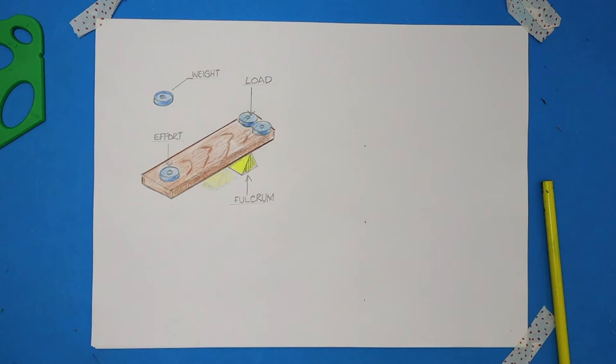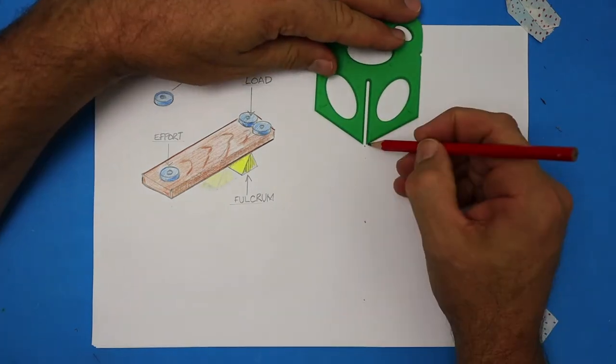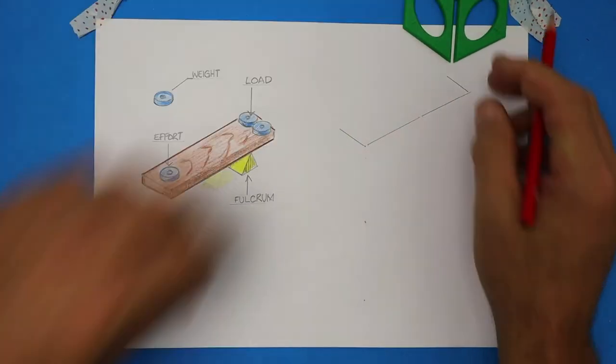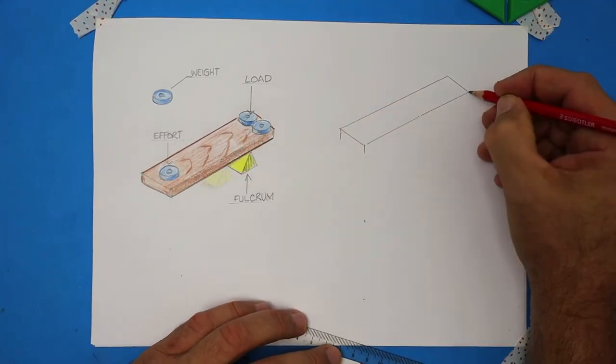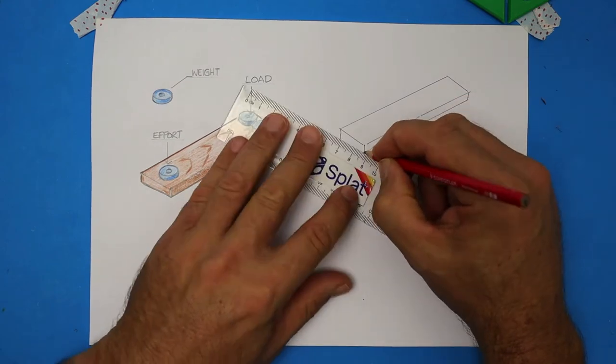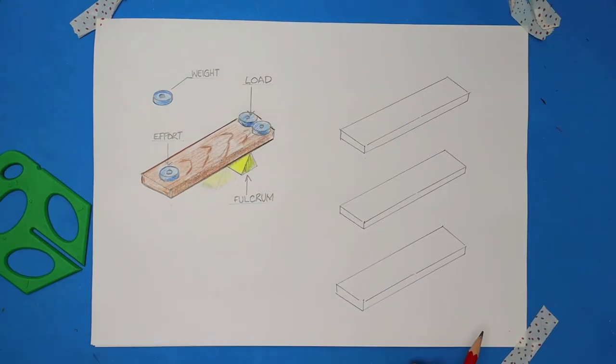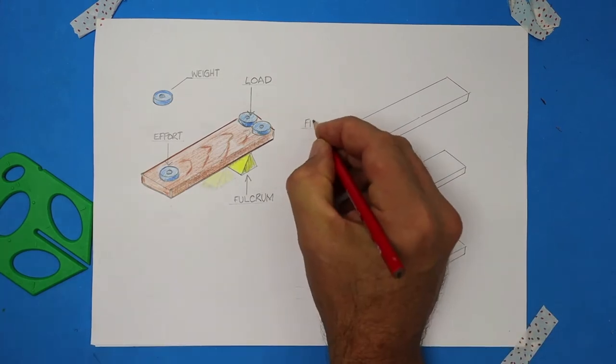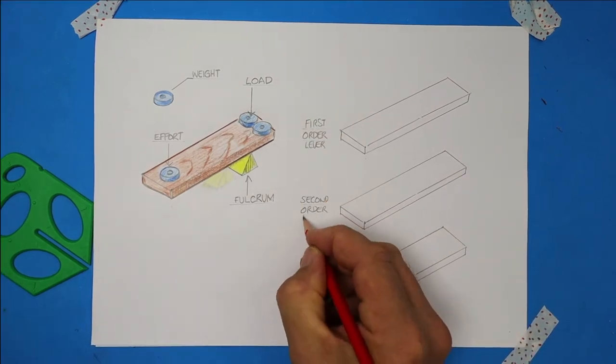There's three possible ways to rearrange those forces, effort, load and fulcrum. When we draw them you'll see how simple they are and don't forget I'm going to show you a way to remember these at the end. Let's draw the beam just like we did previously, only this time I've sped it up and I'm going to use a ruler to see how that looks. Now we'll draw two more beams, some guidelines and we'll label these. These are called a first order lever, second and third order levers.